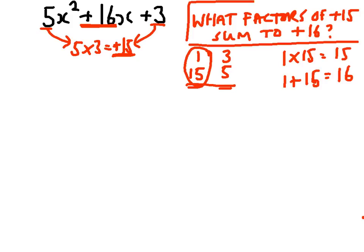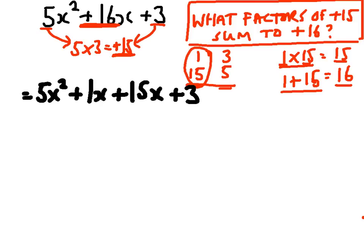So thinking about our original question, what factors of 15 sum to 16? Well, 1 times 15 is equal to 15, and 1 plus 15 is equal to 16. So what we're going to do is rewrite that 16x as 1x plus 15x. So this is exactly the same expression that we had before, except instead of writing 16x, we've got 1x plus 15x. We've still got 16x's.